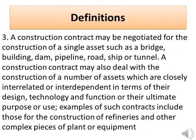Para 3: A construction contract may be negotiated for the construction of a single asset such as a bridge, building, dam, pipeline, road, ship, or tunnel. A construction contract may also deal with the construction of a number of assets which are closely interrelated or interdependent in terms of their design, technology and function or their ultimate purpose or use. Examples of such contracts include those for the construction of refineries and other complex pieces of plant or equipment.